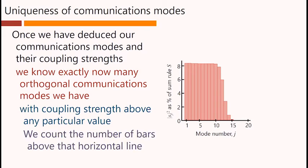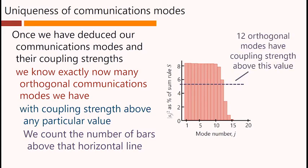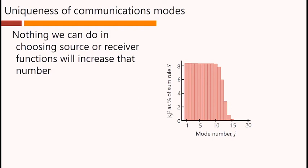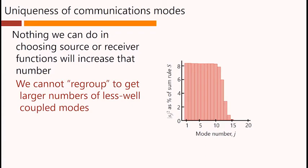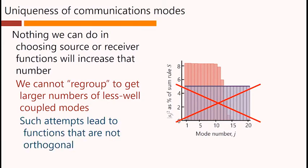We count the number of bars that lie above the horizontal line. So here are 12 orthogonal modes that have coupling strength above this particular value shown by our horizontal line. Nothing we can do in choosing source or receiver functions will increase that number. We cannot regroup to get larger numbers of less well-coupled modes. Such attempts lead to functions that are simply not orthogonal.